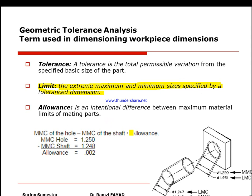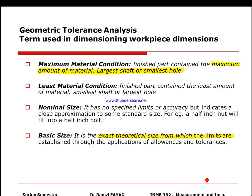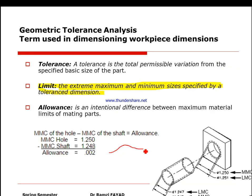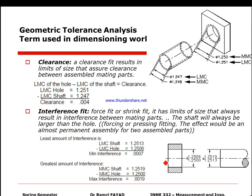Let's consider an example with a shaft going through a hole. The maximum material condition for the hole is 1.2500 and for the shaft it is 1.2498. We have a shaft of approximately 1.24 going through a hole of 1.25. In the normal distribution, the basic size is in the middle — for example 1.255 — with 1.250 on one side and 1.251 on the other. The plus and minus variation is the tolerance.